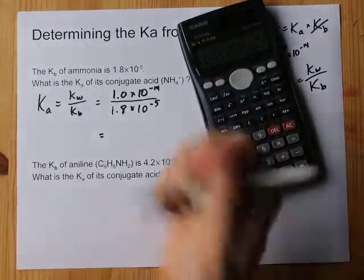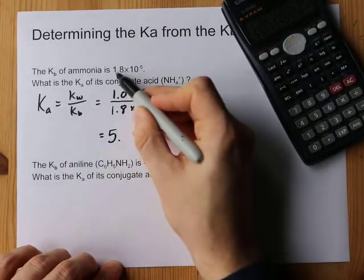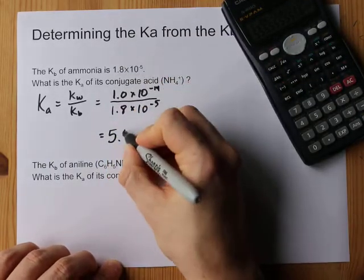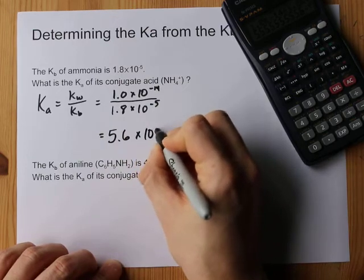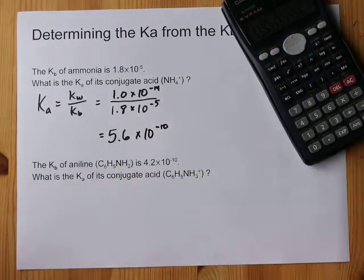Let's write that down. 5 point - now I'm going to keep the sig figs here. That was only two significant figures. I'm going to use 5.6 times 10 to the negative 10. And I'm done.